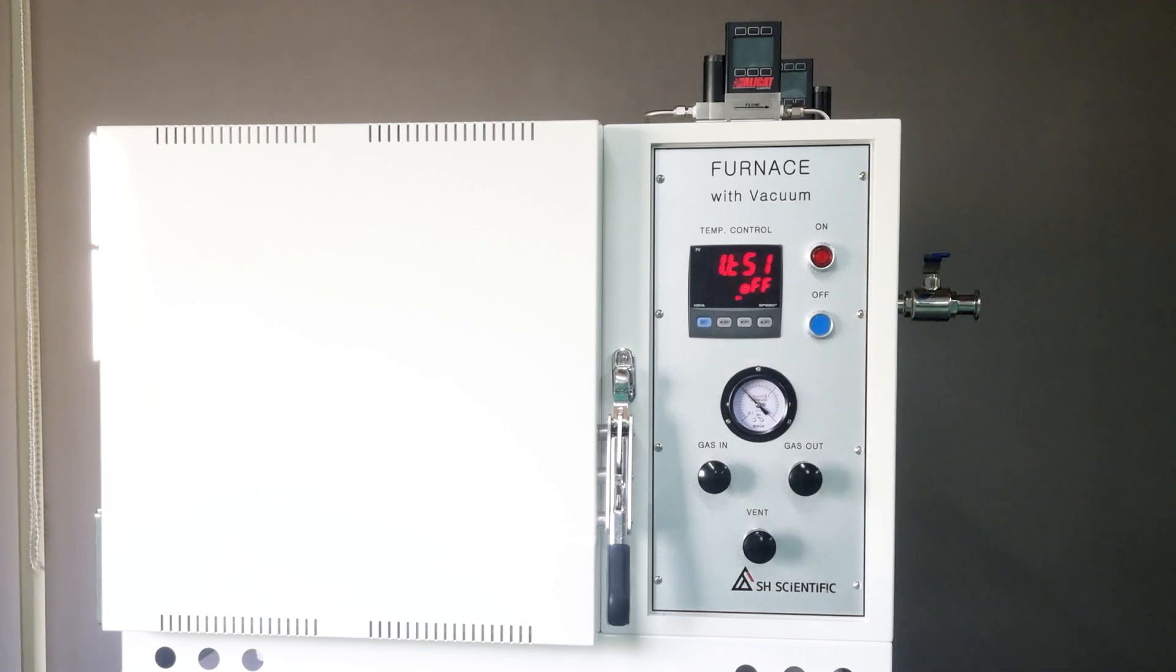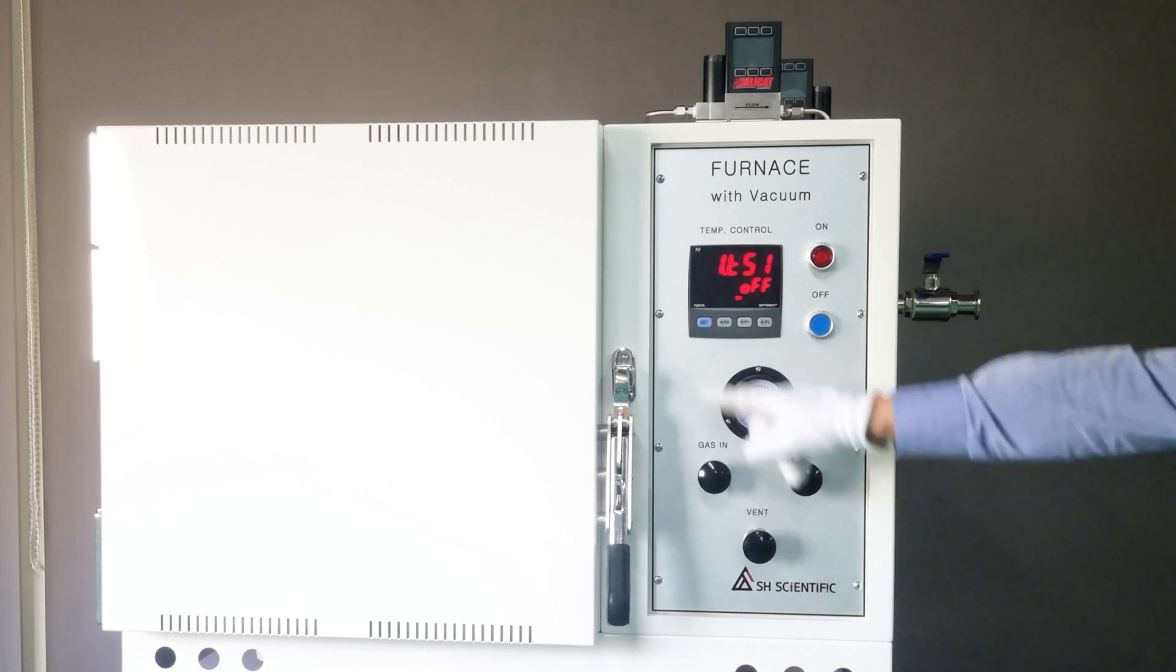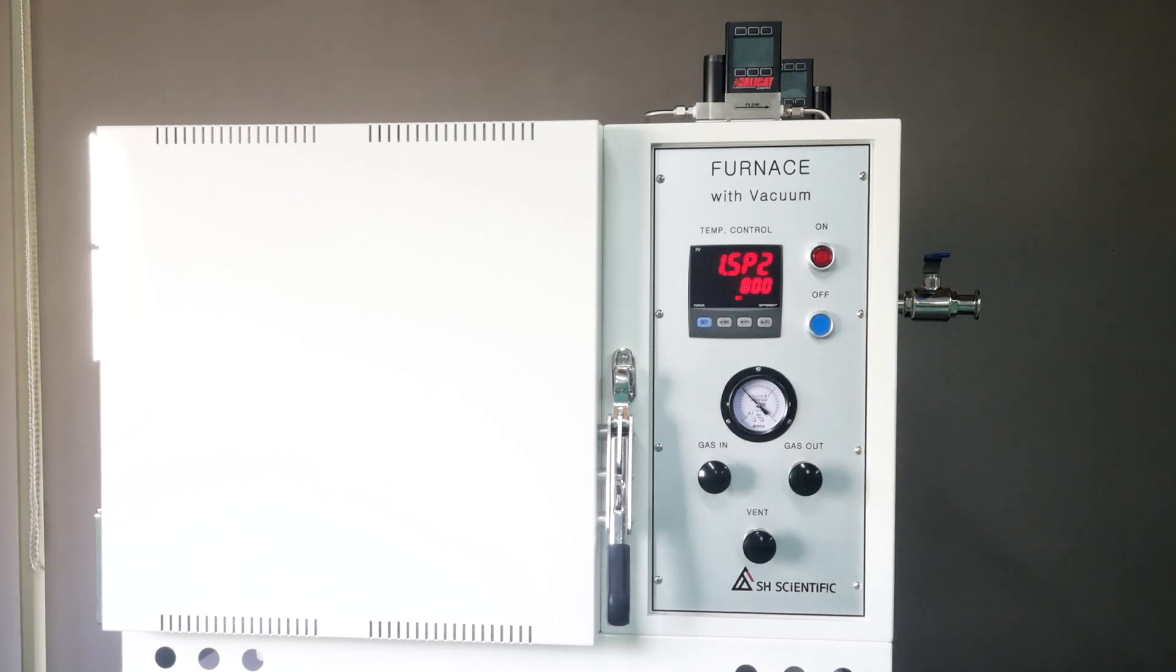Click set again to see 1TS1. Just keep it set to off, since we don't use this function. Click set again for 1SP2, which is the second temperature you want to reach or hold. I'm using 800 degrees Celsius again, which means 1SP2 is the same as 1SP1. So in effect, it will just hold 1SP1 straight through.